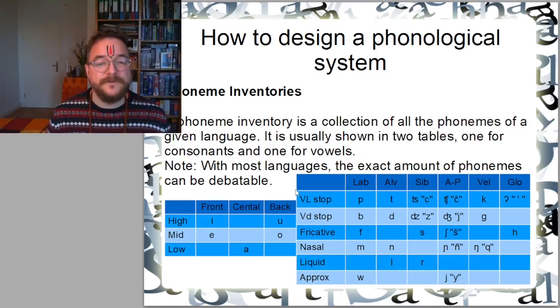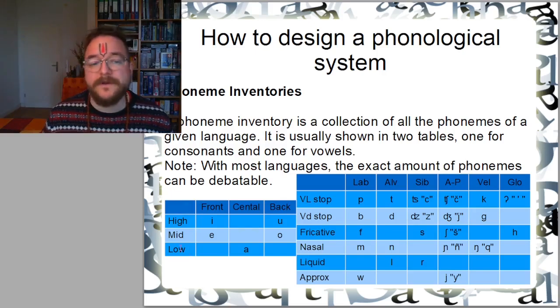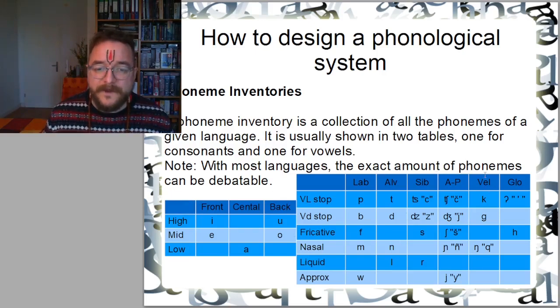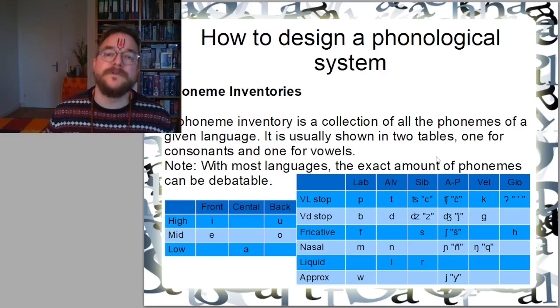I've given you two tables as an example to just get the impression what a phoneme inventory looks like. Here on the left you have the vowel inventory. That's a very easy vowel inventory of five vowels. And then you have the consonants. Here this is like a medium-sized consonant inventory.